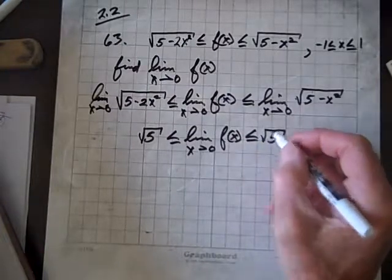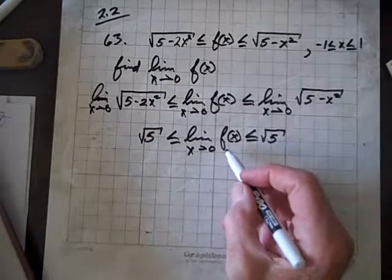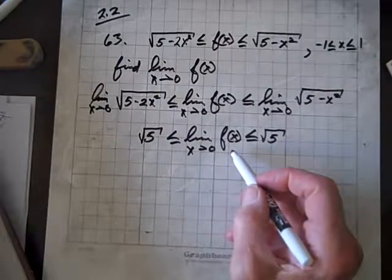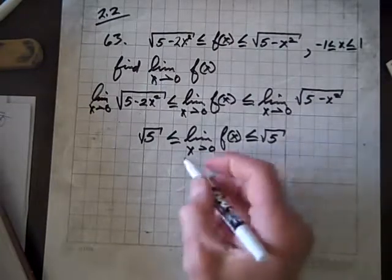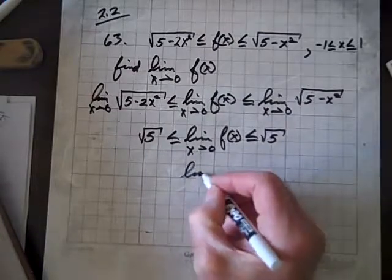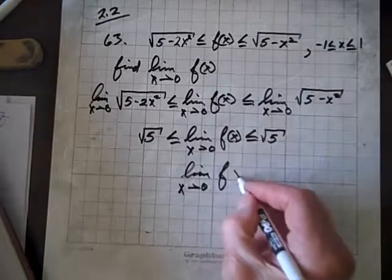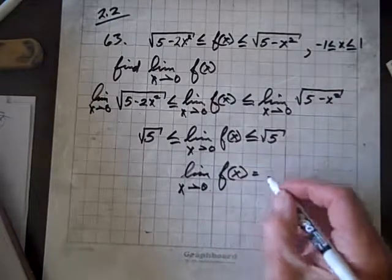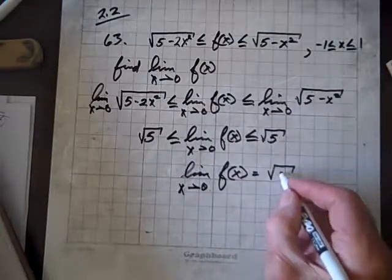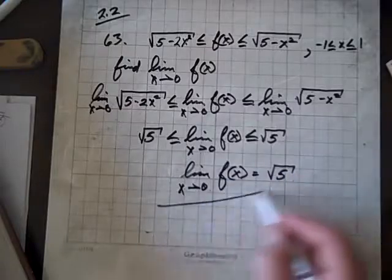Well, then, by the sandwich theorem, or the squeeze theorem, x is sandwiched between square root of 5 and square root of 5. So, therefore, the limit as x goes to 0 of f of x equals the square root of 5. There are no other options, and we're done.